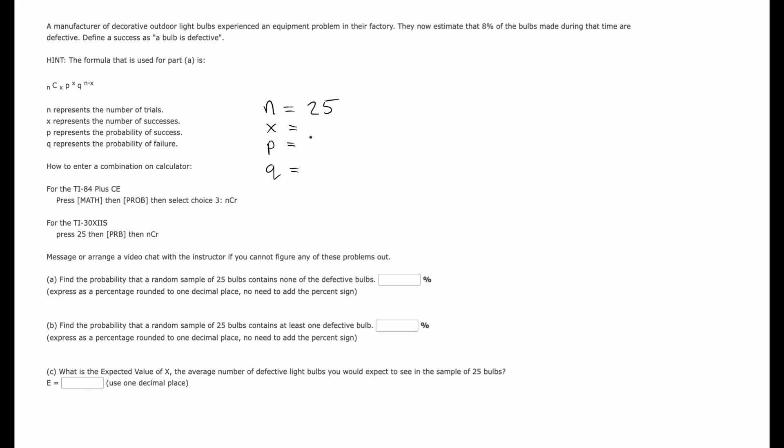What should be X, which is the number of successes that this particular question is looking for. It should be a whole number, a number of times that you find a defective bulb in this case. They're actually looking for, in part A, they want what's the chance of finding no defective bulbs.